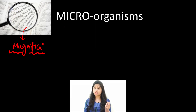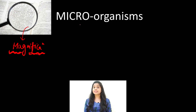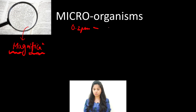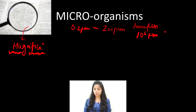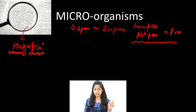Microorganisms are extremely tiny species and magnification plays a very important role in observing them. The size range of these organisms is from 0.2 µm to approximately 200 µm. Here µm means micrometer, where 10 to the power of 6 micrometers equals 1 meter, giving us an idea of how small a micrometer can be.